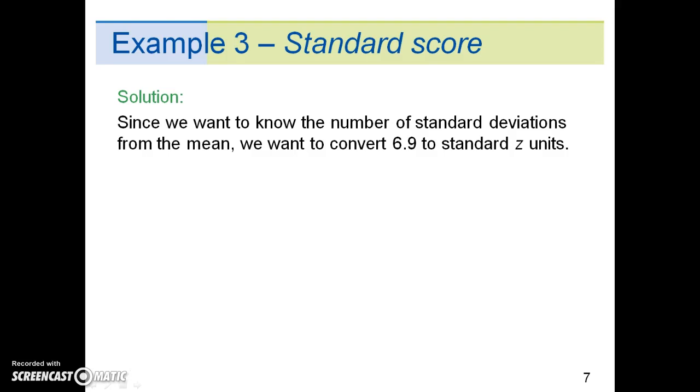The solution is as follows. Since we want to know the number of standard deviations from the mean, we want to convert 6.9 to standard z units. So using the z-score formula, we substitute in 6.9 for the x-value, 8 for μ, and 0.5 for σ. Doing the math, we get negative 2.2 for our z-unit.